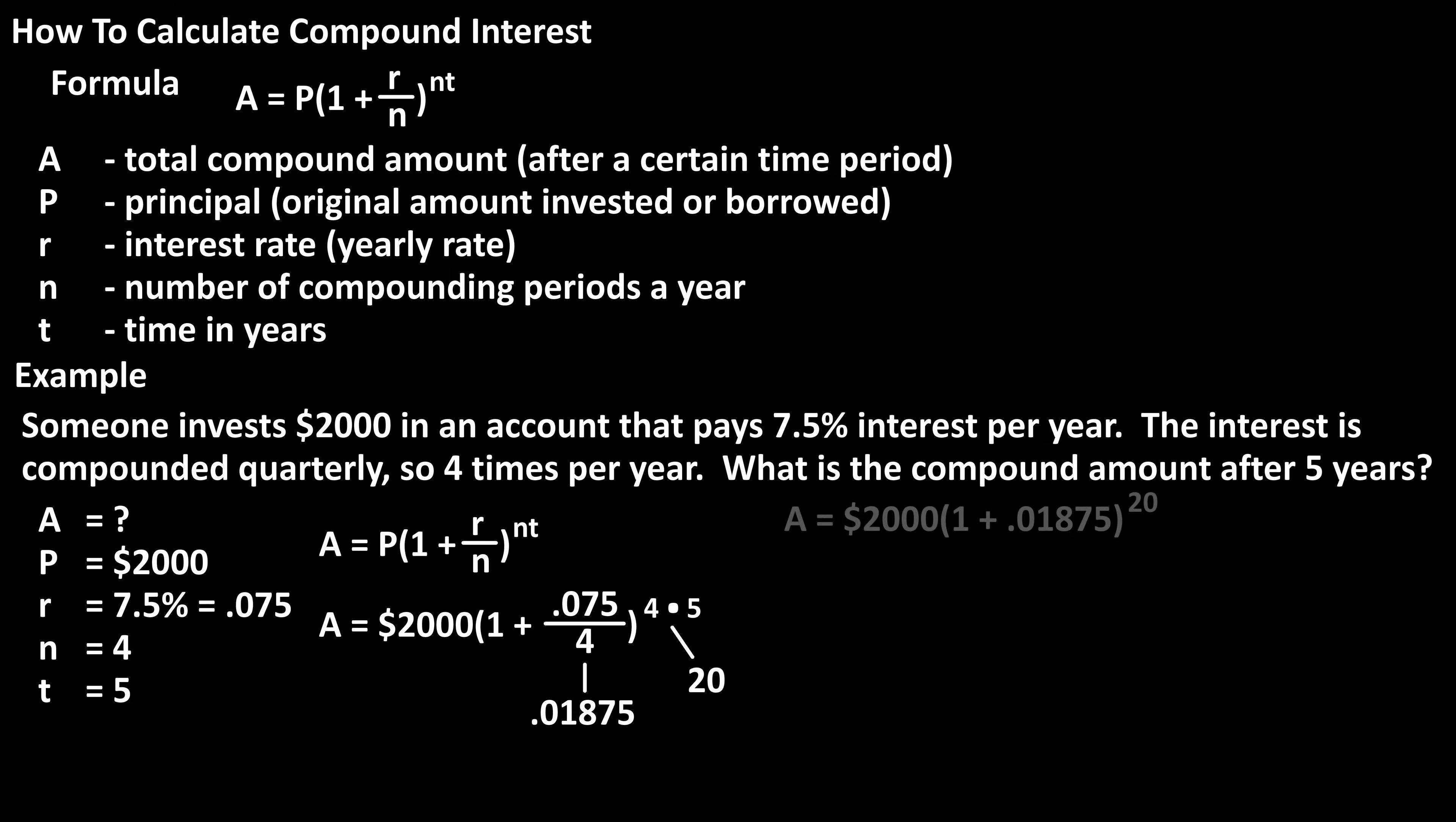And now we have A equals $2,000 times the quantity 1 plus .01875, raised to the 20. After the addition in the parentheses, we have $2,000 times 1.01875 raised to the 20. Using a calculator, 1.01875 raised to the 20 equals 1.449948.